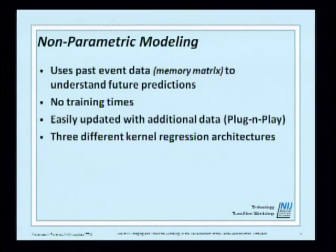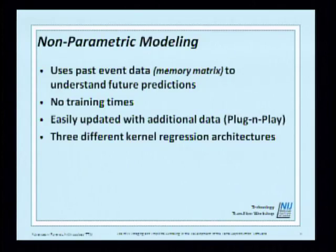The nonparametric modeling uses past event data and a memory matrix to understand future predictions. There is no training time — we don't have enough data to create training datasets. The model is easily updated with additional data, like a plug-and-play system. If you look at this kernel regression, it's like plug-and-play software: you just add data and it works. We started with three different kernel regression architectures.